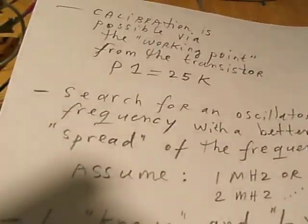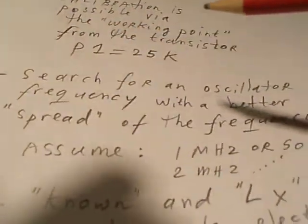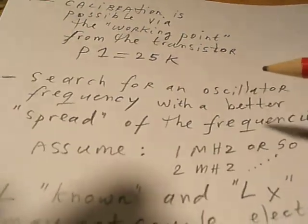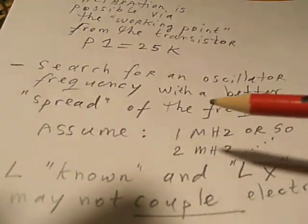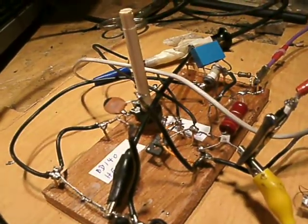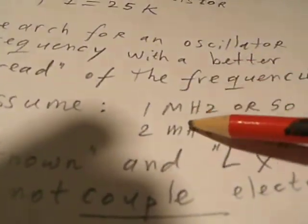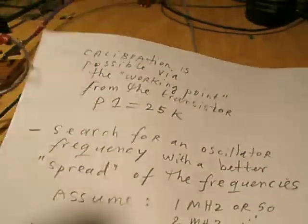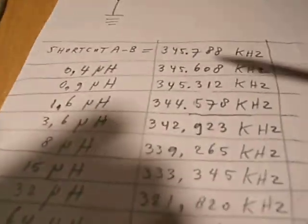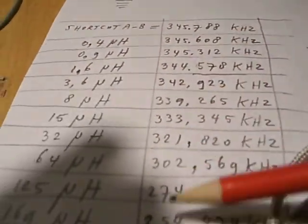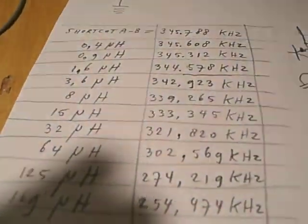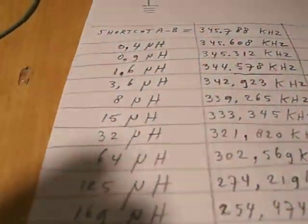That was the first tip. Or the second: search for an oscillator frequency with a better spread of the frequencies. I think that when this oscillator works on one megahertz or so, or two megahertz, you will have a better spread from the frequency, so a greater variance here in the frequencies that you can read out. And that will give a more precise indication from the inductance.